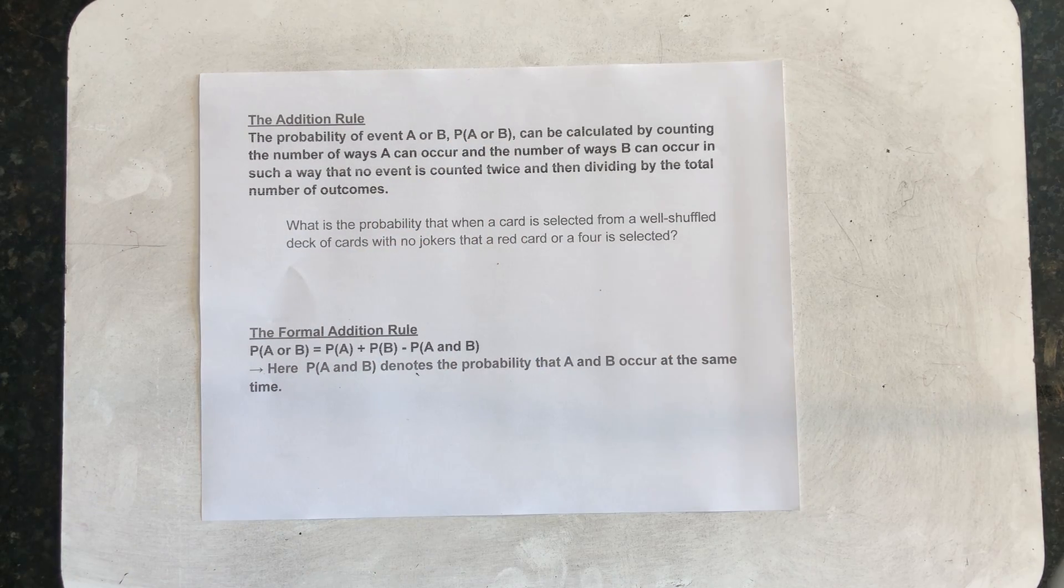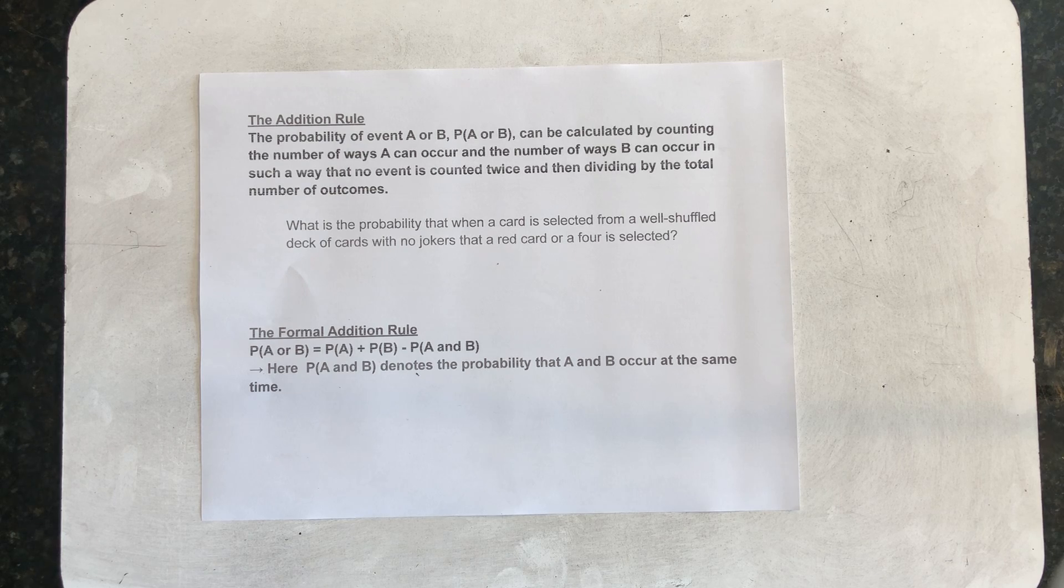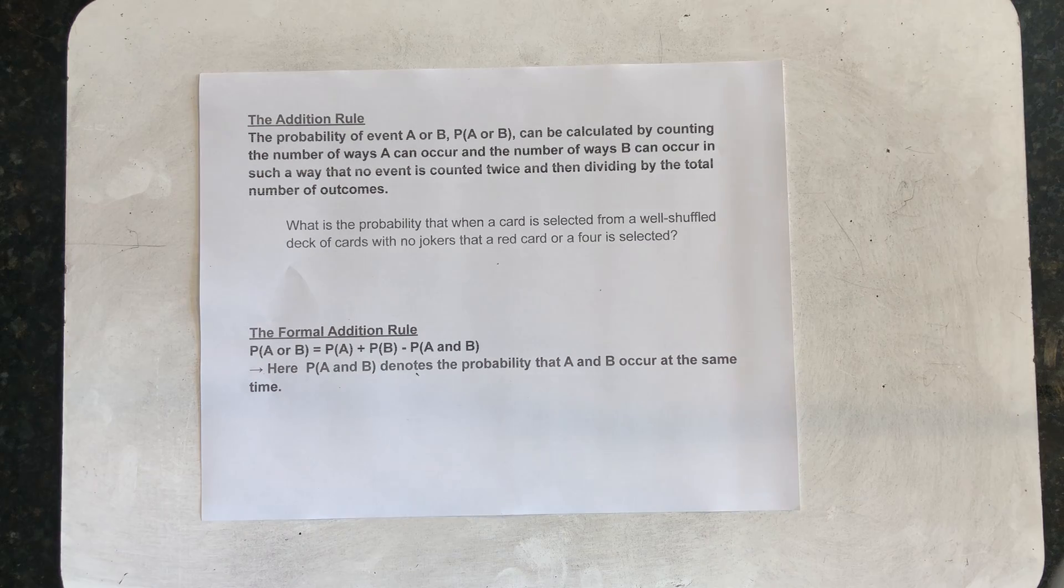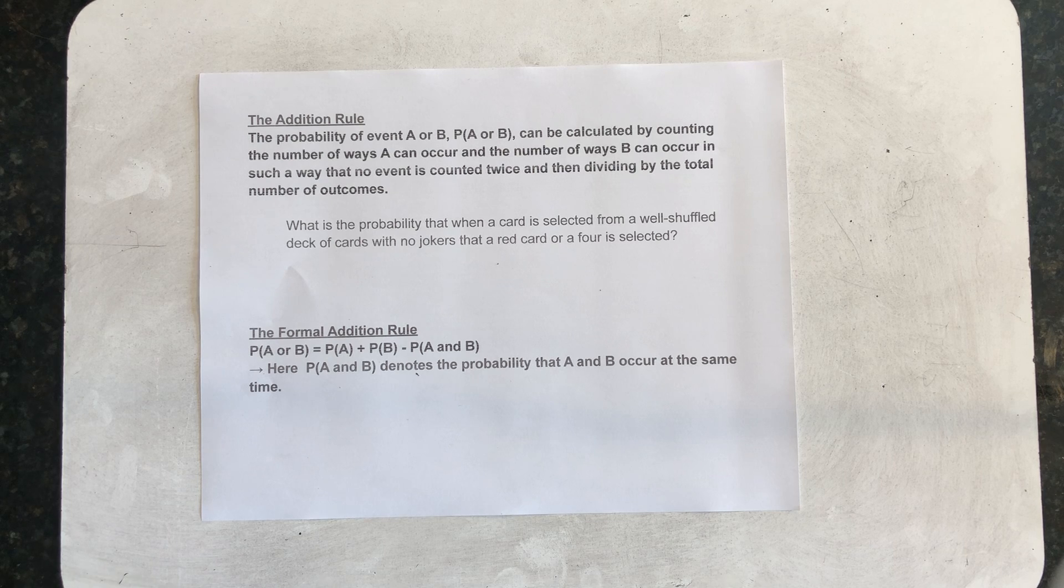can be calculated by counting the number of ways A can occur and the number of ways B can occur in such a way that no event is counted twice, then dividing by the total number of outcomes. A simple example. What is the probability that when a card is selected from a well-shuffled deck of cards with no jokers that a red card or a 4 is selected?